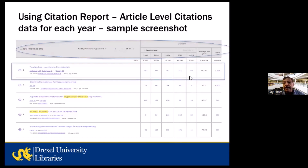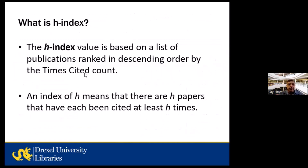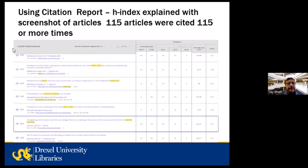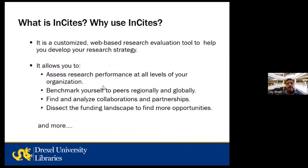The h-index is based on a list of publications ranked in descending order by times cited. 'H' means that h papers have been cited at least h times. In this example, paper number 115 was cited exactly 115 times, and all papers above it were cited more than 115 times — that is the h-index. Now we come back to Insights, which is the core of this session.